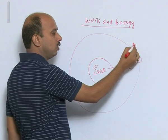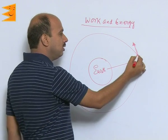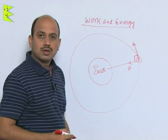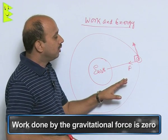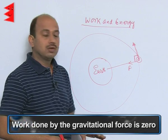Tangential motion velocity is here. If you see this angle is here, this is 90 degrees, so here the work done by the gravitational force is zero.